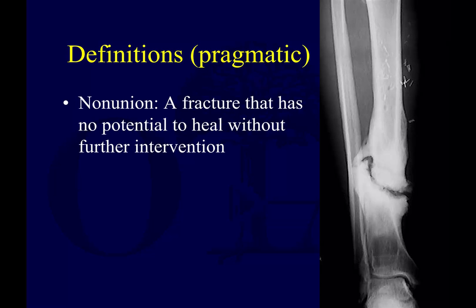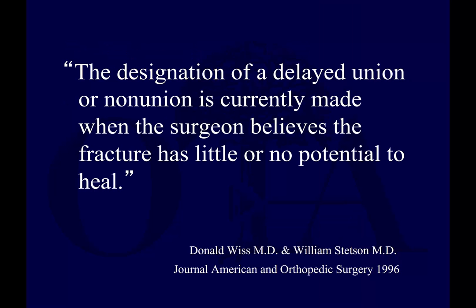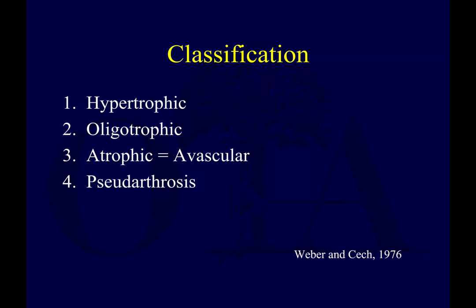A practical definition may be a fracture that has no potential to heal without further intervention. There are studies that have tried to show how we can potentially predict when a non-union is going to occur. Drs. Wiss and Stetson back in 1996 said the designation of a delayed union or non-union is currently made when the surgeon believes the fracture has little or no potential to heal — so there's some opinion involved.